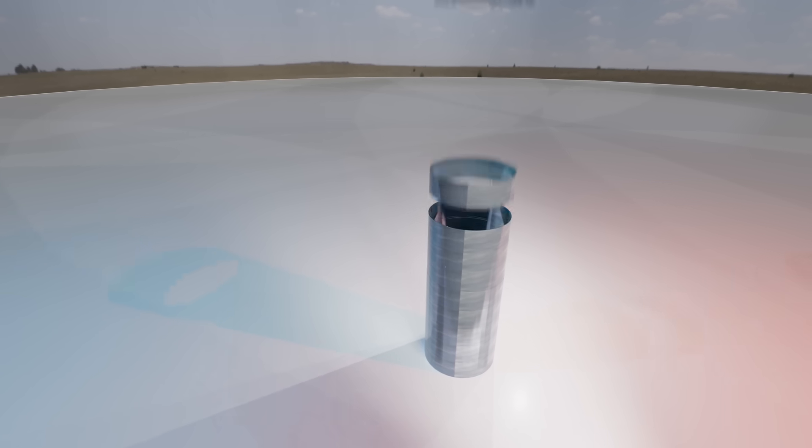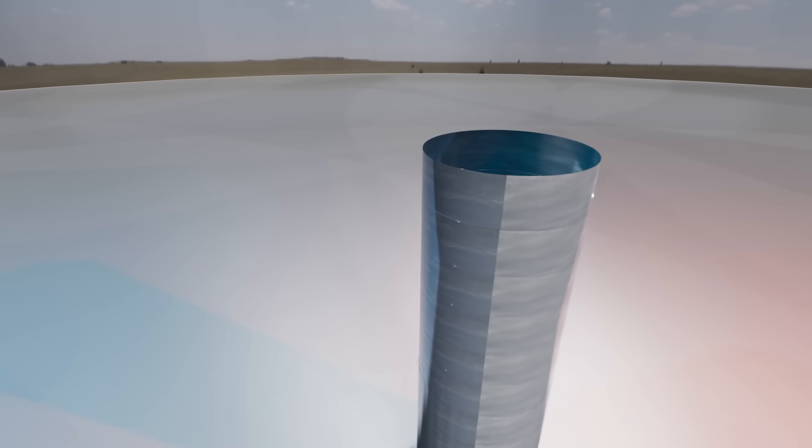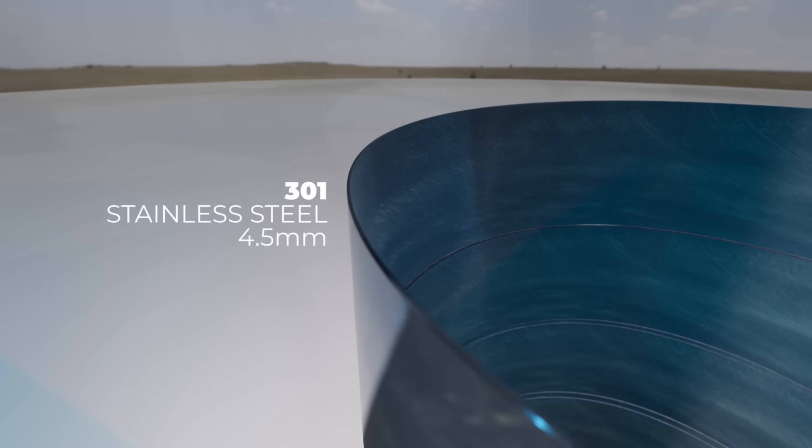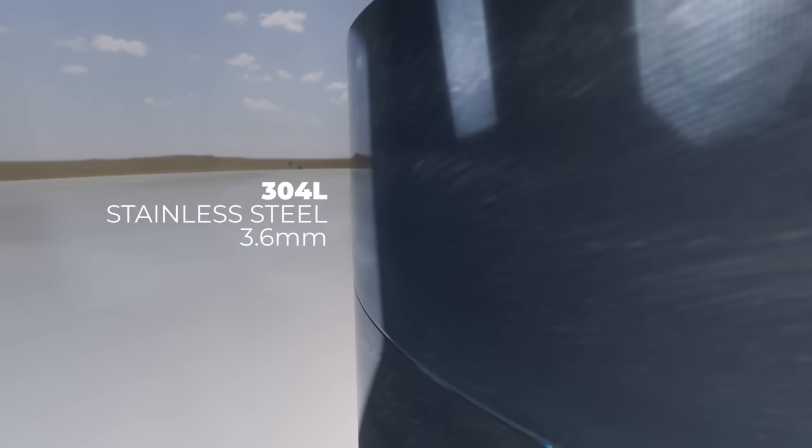Each ring was now made from thinner single sheets of stainless steel, which required much less welding. They also moved from 301 to 304L stainless steel, which was more resistant to corrosion when welding.